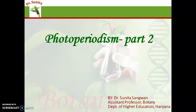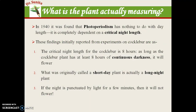In the last class we started the topic photoperiodism. We studied different types of plants — short day plants, long day plants, and day neutral plants — as different categories into which photo-periodic plants are divided. We will continue that topic. We have seen that short day plants flower under short day conditions and long day plants flower under long day conditions. But what is actually being measured — day light or night length?